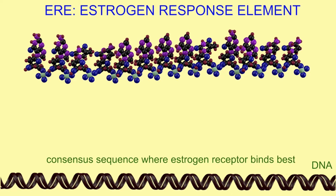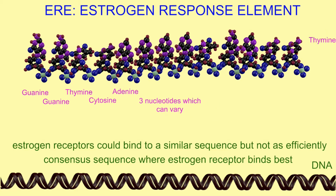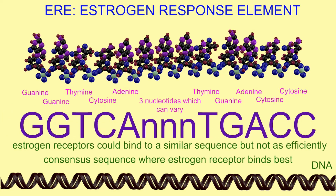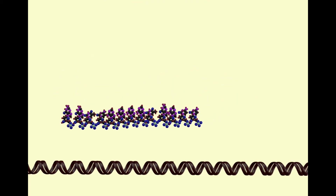This is because activated estrogen receptors will bind to a specific sequence of DNA, known as the estrogen response element, or ERE. The sequence given here is a consensus sequence — the sequence most typically possessed. Some EREs possess alternate sequences, but they do not bind estrogen as efficiently. The consensus sequence is: guanine, guanine, thymine, cytosine, adenine, then three nucleotides which can vary, followed by thymine, guanine, adenine, cytosine, cytosine.